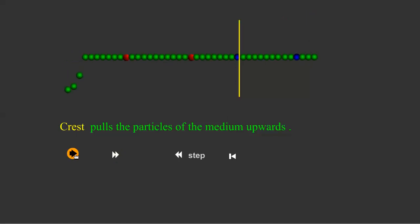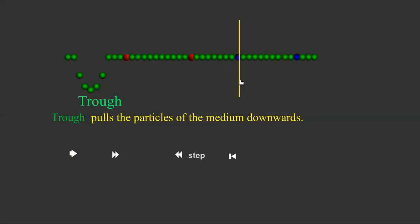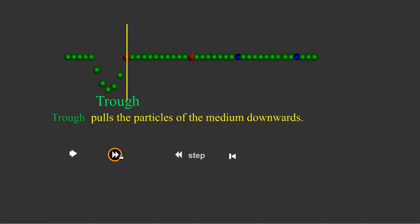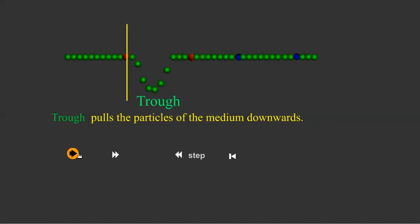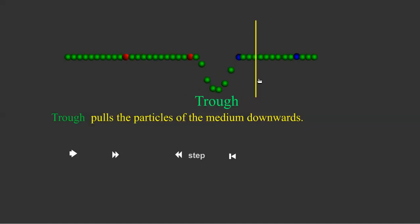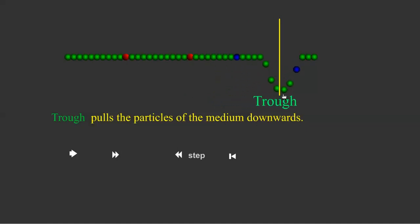Now let us consider a trough. As the trough reaches the red particle, it pulls the red particle downwards and allows it to return to its mean position. So wherever the trough goes, particles are pulled down. From this we can understand: crest pulls the particles of the medium in one direction, and trough pulls the particles in the opposite direction. With this understanding, let us now discuss the principle of superposition.